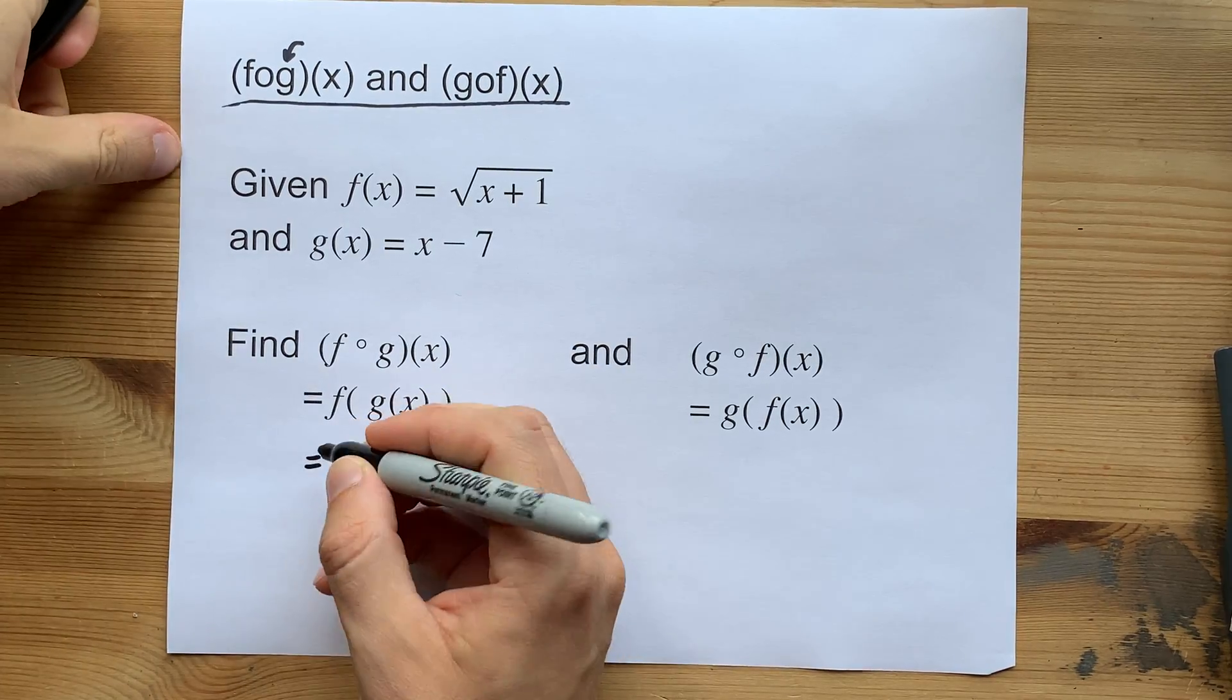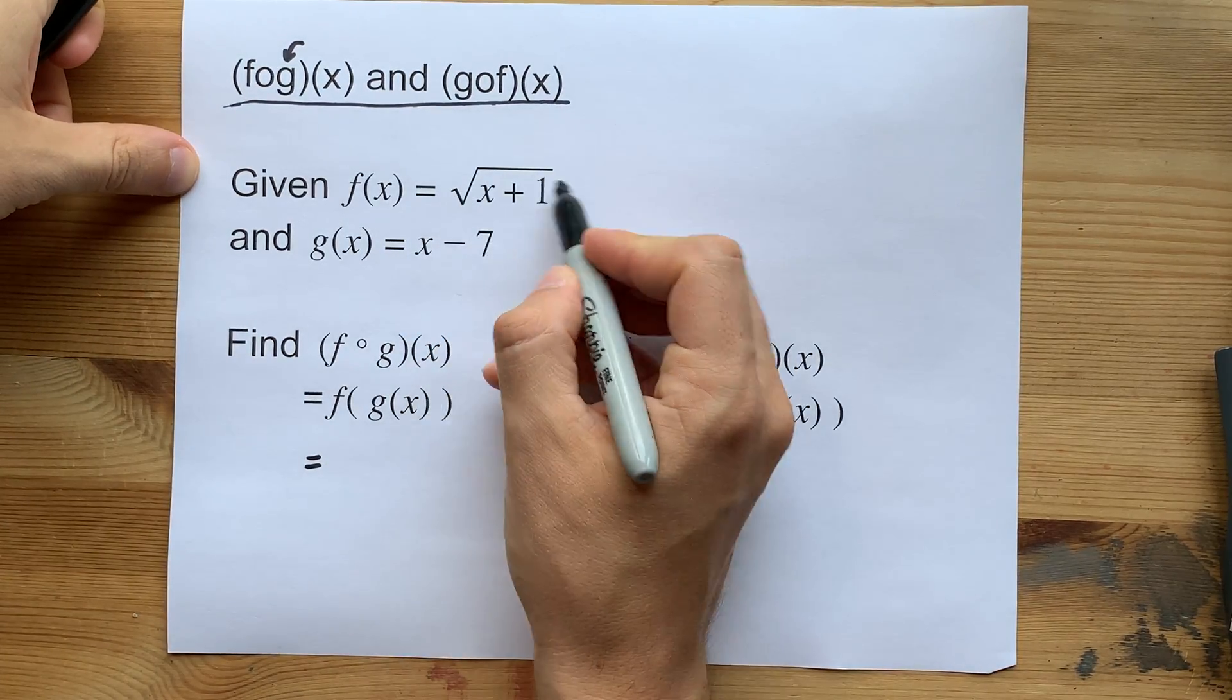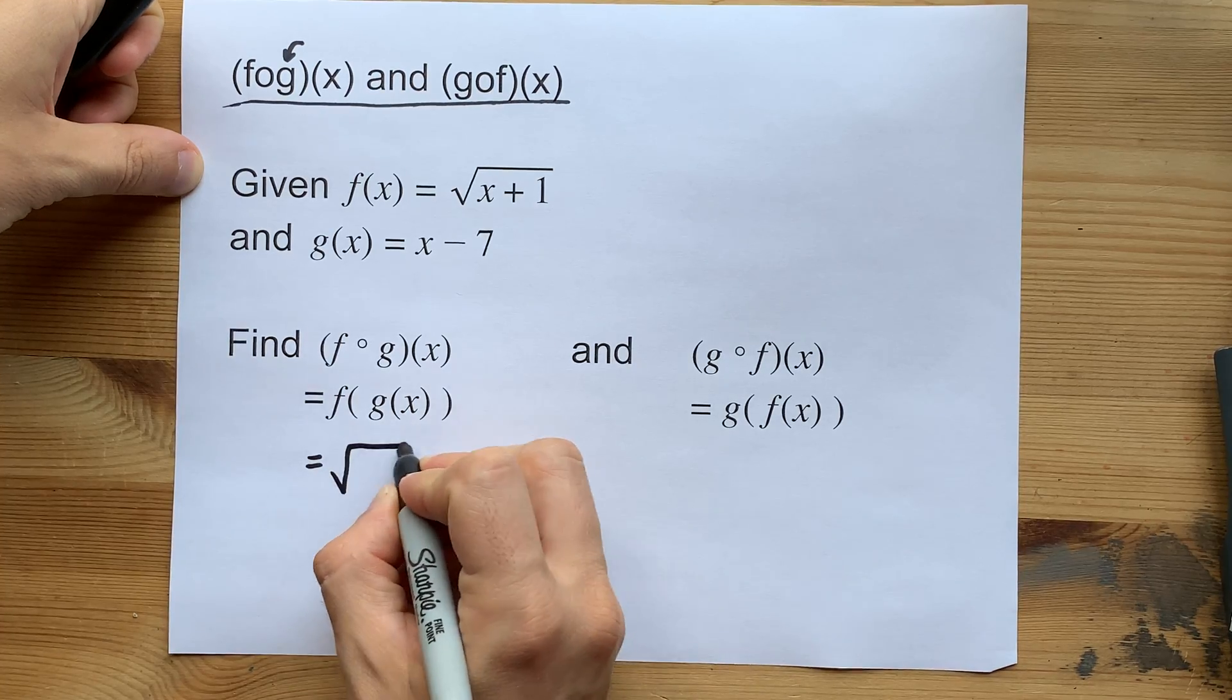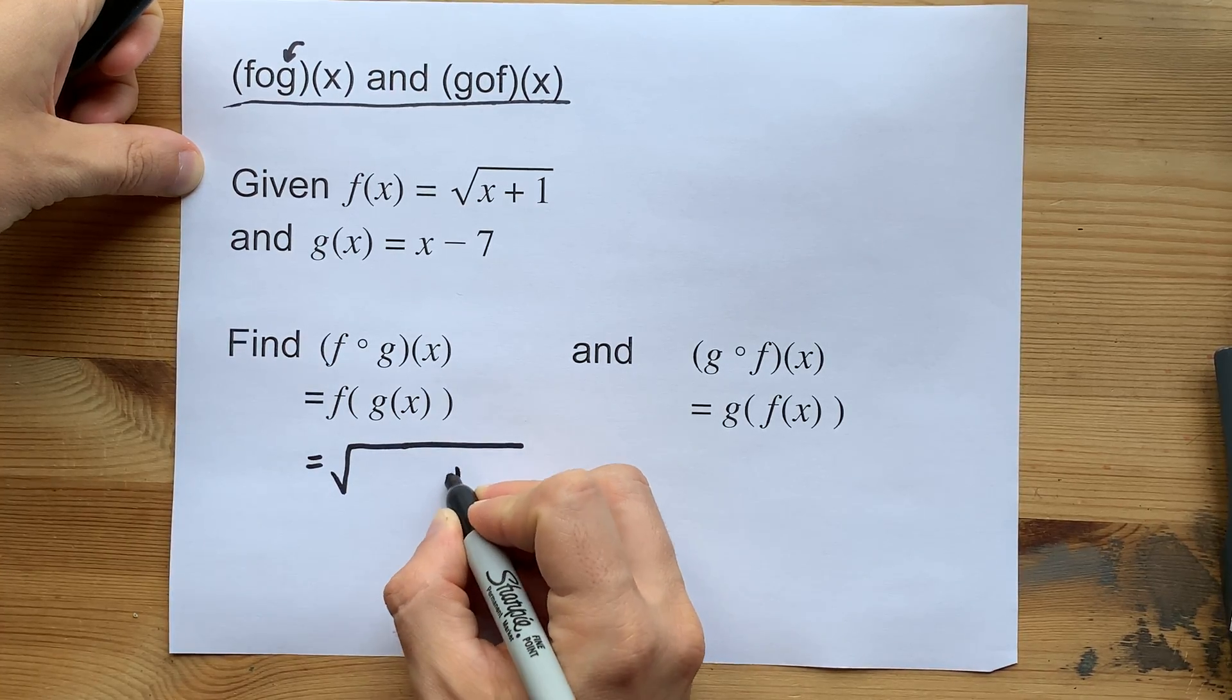So what I mean is copy out f, square root of x plus 1, but don't write the x. Square root of blank plus 1.